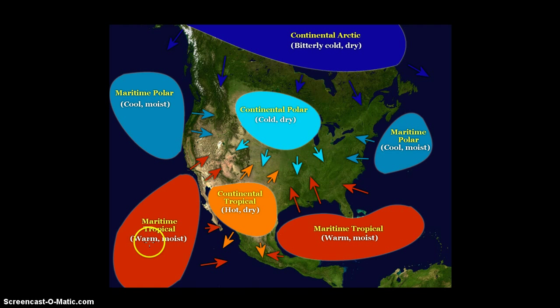Maritime, tropical. Maritime refers to the ocean, so maritime tropical would be warm and moist. And then, finally, continental arctic, which would be right up here where it's bitterly cold and dry. So, there you have it.